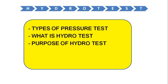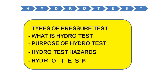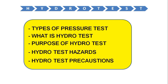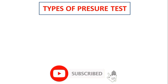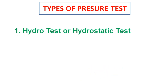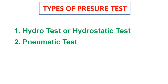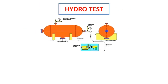Types of pressure test: in the process industry, two methods are widely used for pressure testing of piping or equipment. The first one is hydro test or hydrostatic test, and the second one is pneumatic test.